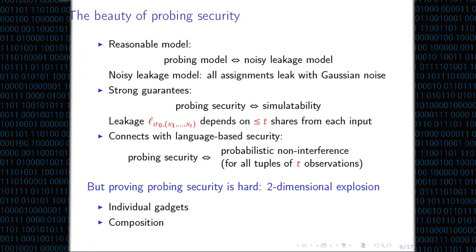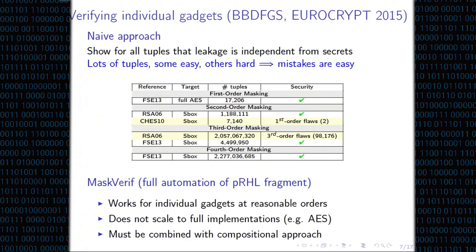Probing security is actually very hard to verify — there is a two-dimensional explosion. When verifying a single gadget, you have to check all tuples of observations. For a full AES at first order, you only have around 17,000 tuples to check. But for an S-box at third order, you have over 2 million. This grows exponentially, so it is not really feasible to go and check each tuple individually.